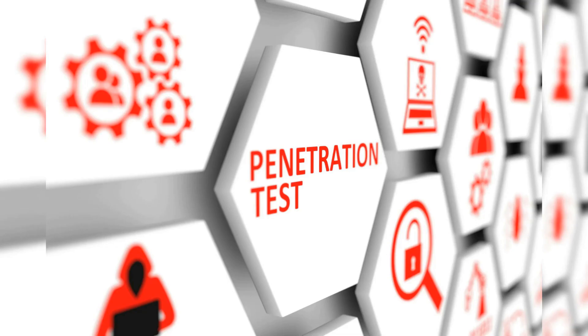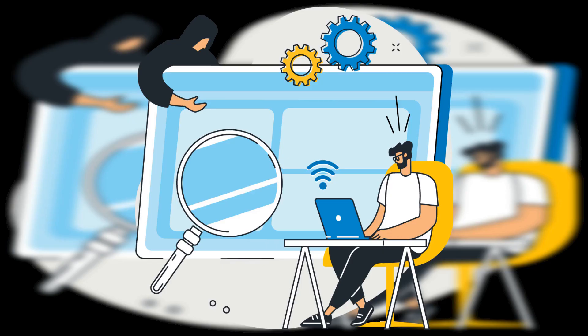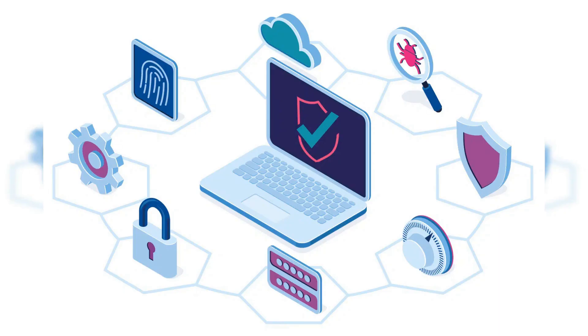The first way to test your application security is through penetration testing, also known as pen testing. It involves simulating an attack on your application to identify vulnerabilities that a real attacker could exploit. Penetration testing can be performed by either an internal or external team, and it's important to select a team with the expertise and experience needed to accurately identify vulnerabilities.